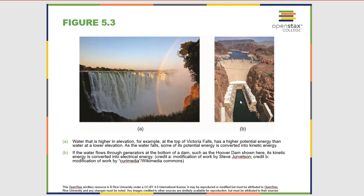Chemists don't think about potential energy in terms of gravity. They think about it in terms of the energy of position in terms of chemical bonds. A carbon bonded to a hydrogen or a carbon bonded to a carbon is relatively high potential energy. A carbon bonded to an oxygen is relatively low potential energy. So in a combustion reaction, changing from carbons bonded to carbons and hydrogens to carbons bonded to oxygens and hydrogens bonded to oxygens — that potential energy can be used to heat houses, move cars, and so on.